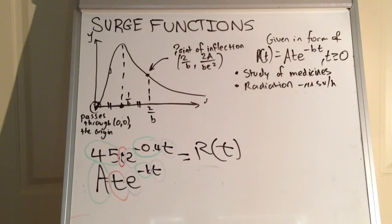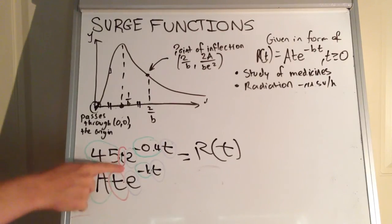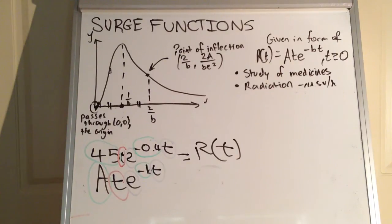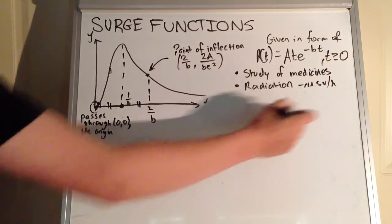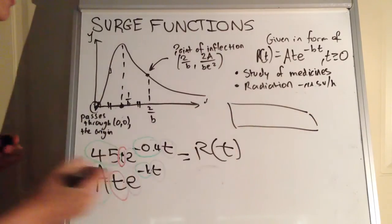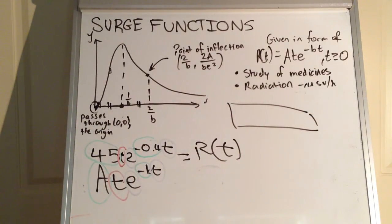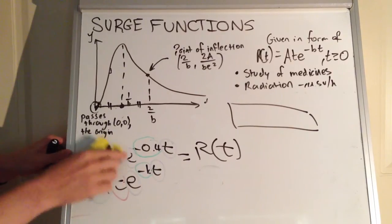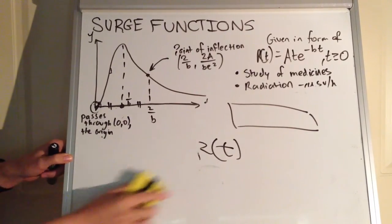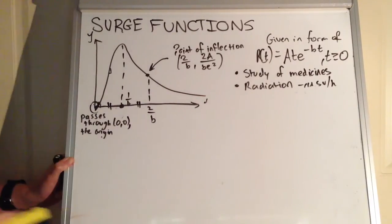If you didn't know the function type and had a table of values, you could plug them into your calculator and check the different models to see which one resulted in the least deviation from the model. You can see it's a surge model because all the parts in the generic form link up with the actual function we're given.